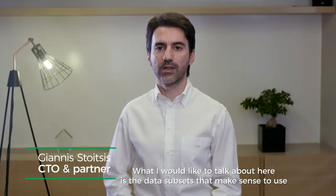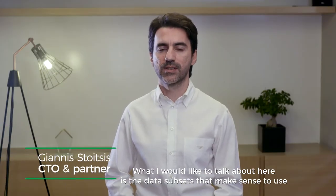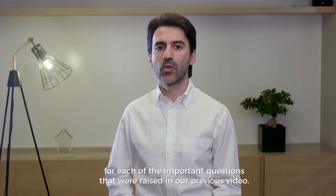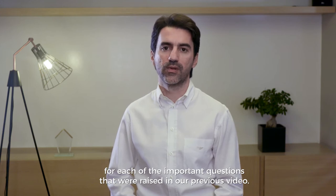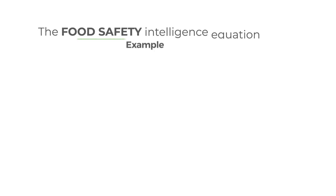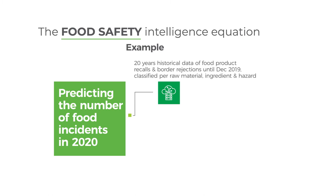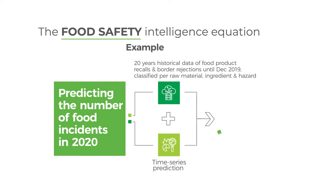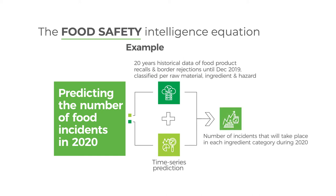What I would like to talk about here is which are the data subsets that it makes sense to use for each one of the important questions we've mentioned in our previous video. Given that I have access to historical data about all food product recalls and border rejections that have taken place until December 2019, classified according to the raw materials, ingredients and hazards that were linked to the recall — is it possible to predict with high confidence how many food safety incidents we are going to have for each ingredient category in 2020?